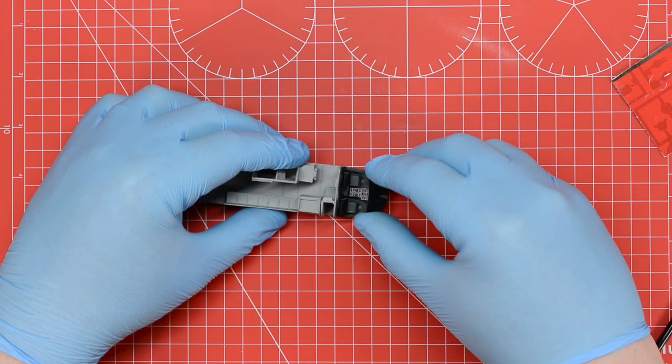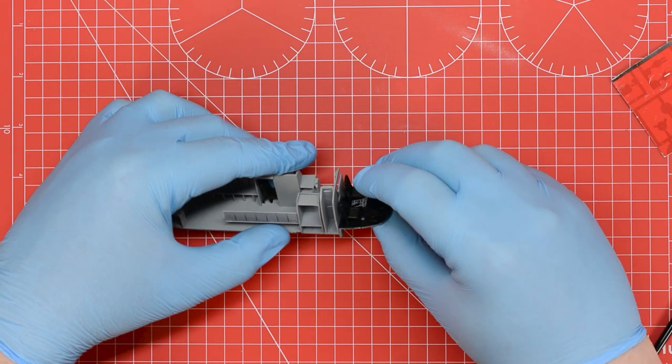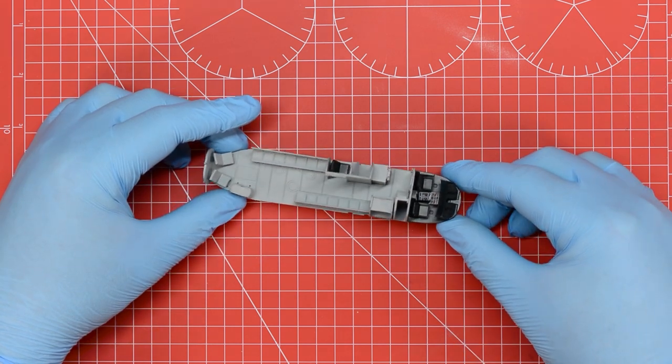Using a small piece of tissue we can then wick away the excess moisture and the transfers in position. Once the details have been added to the instrument panel we can glue this in position and the interior assembly is completed.